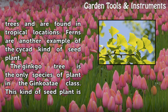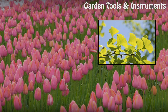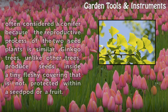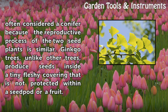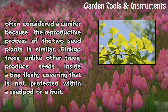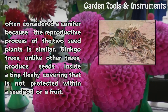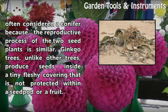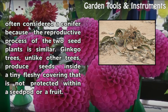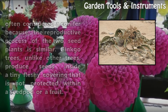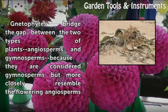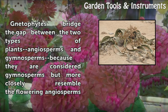The ginkgo tree is the only species of plant in the ginkgo class. This kind of seed plant is often considered a conifer because the reproductive process of the two seed plants is similar. Ginkgo trees, unlike other trees, produce seeds inside a tiny fleshy covering that is not protected within a seed pod or a fruit.